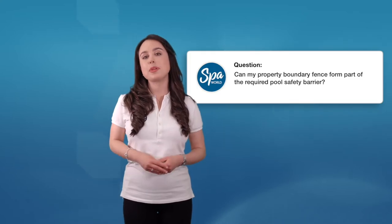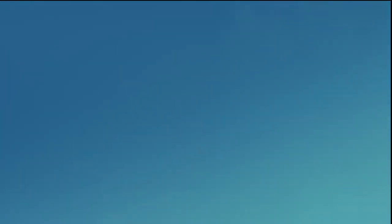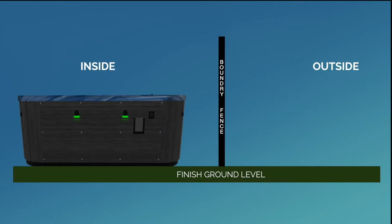Can my property boundary fence form part of the required pool safety barrier? Yes, a boundary fence can act as part of a barrier to a pool if the height of the fence is at least 1800 millimetres on the inside. A boundary fence also needs to have a non-climbable zone with a 900 millimetre radius from the top of the inside of the barrier. There also needs to be a clear area of at least 500 millimetres from the bottom and inside of the barrier.